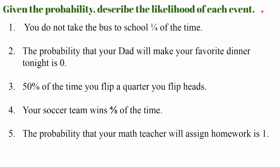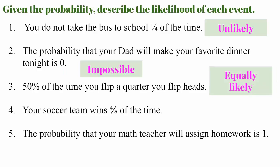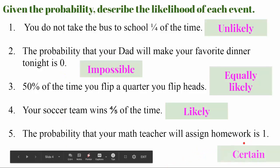Number one: you do not take the bus to school one-fourth of the time — that is unlikely; one out of four is unlikely to happen. Number two: the probability that your dad will make you your favorite dinner tonight is zero — that's impossible because there's a zero percent chance. Number three: 50% of the time you'll flip a quarter and get heads — equally likely, since a quarter has two outcomes, heads or tails. Number four: your soccer team wins four out of five times — that's likely. Number five: the probability that your math teacher will assign homework is one — that is certain.